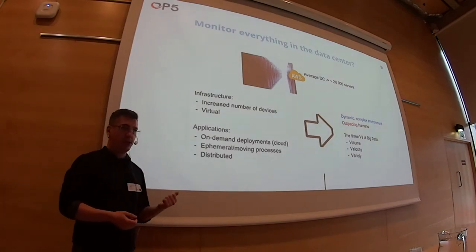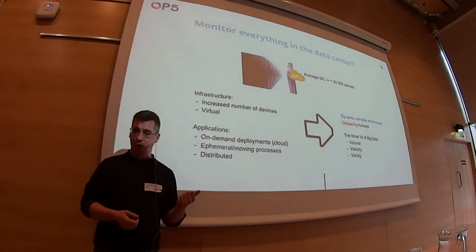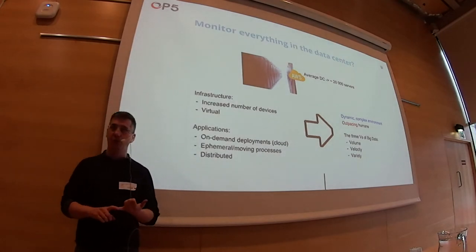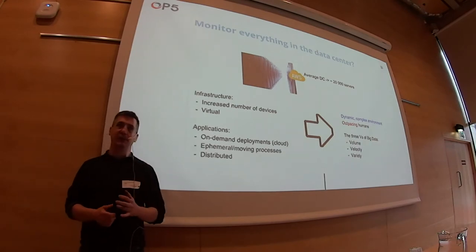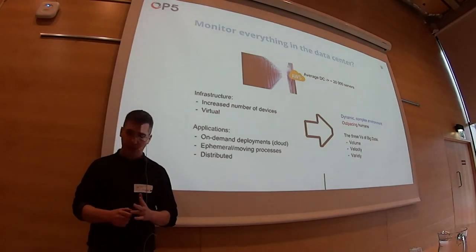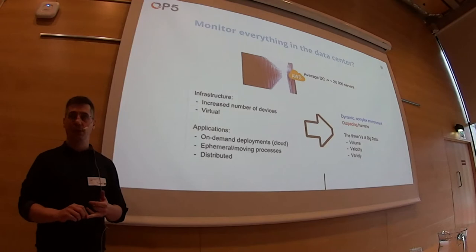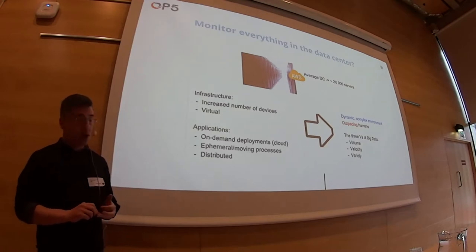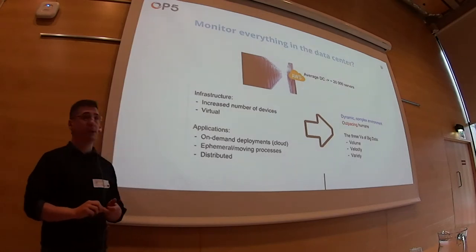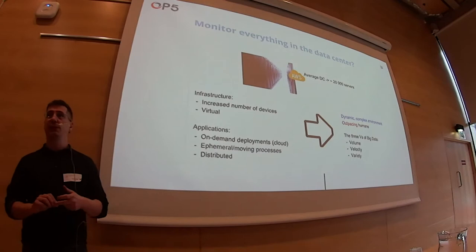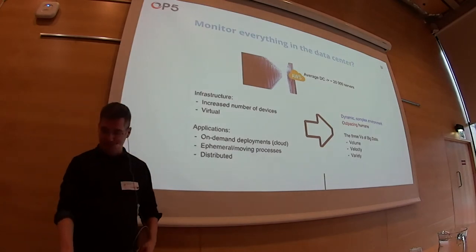In big data, this is often referred to as the three V's of big data. You have the volume — the actual mass of data being produced. You have the velocity — the speed at which data is created. And then you have the variety: you have multiple sources of data, and those sources are not the same — they all contain a different kind of information.